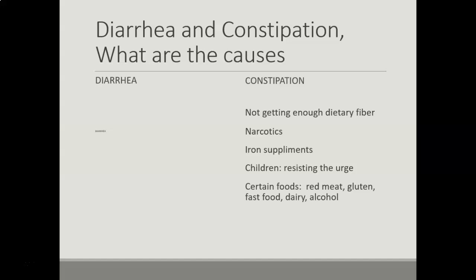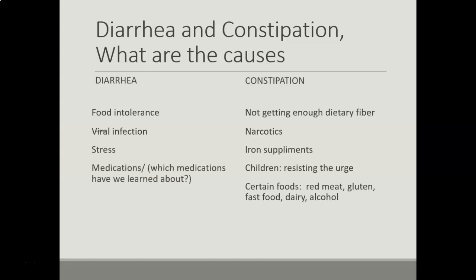For diarrhea and constipation: causes of diarrhea include food intolerance, a virus, stress, medications such as antibiotics, and pregnancy. For constipation, it's generally not getting enough fluids, not enough dietary fiber, taking narcotics, iron supplements, or children who resist the urge. Certain foods can be more constipating than others, such as red meats, a lot of gluten, processed foods, dairy, and alcohol.